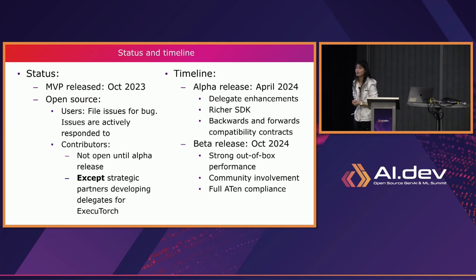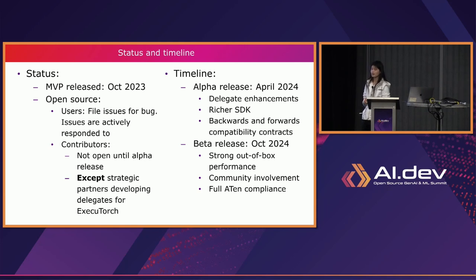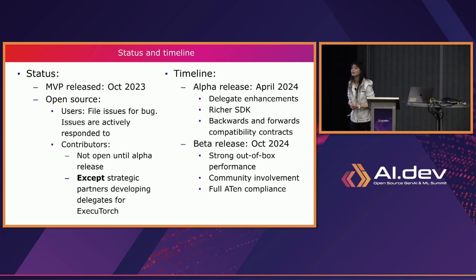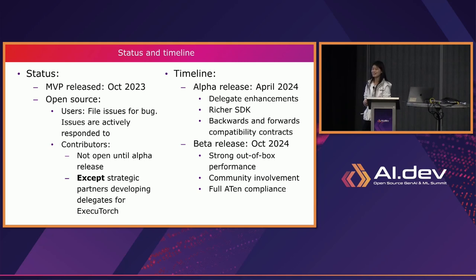Follow-up: is torch.export better than torch ONNX export in terms of success rate? Response: torch ONNX export exports an ONNX graph for the ONNX runtime. I'm actually not sure about the comparison in success rate — sorry about that.